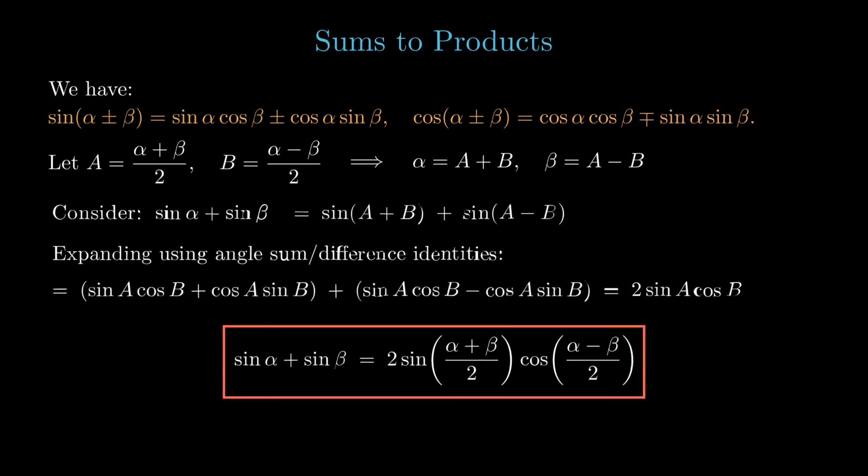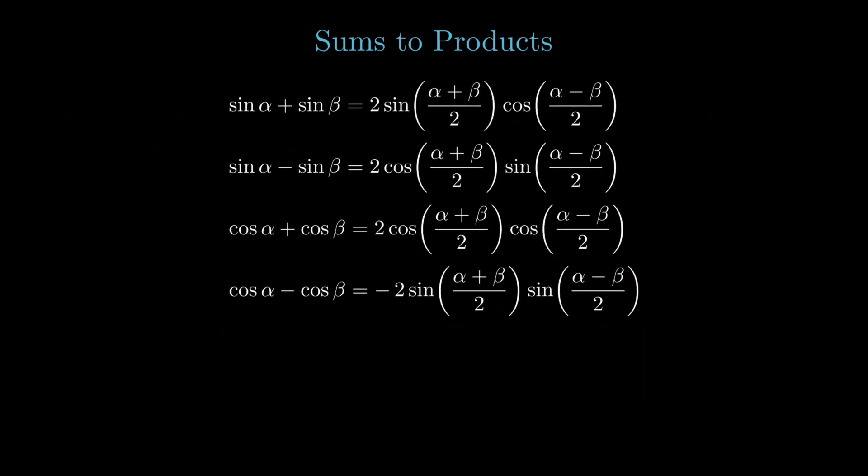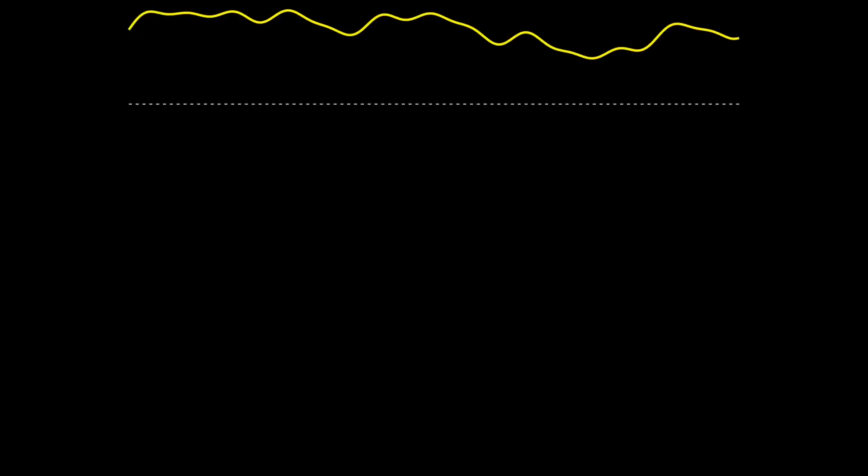In a similar manner, you can obtain the sum to product identities for sin α - sin β, cos α + cos β, cos α - cos β. These identities are extremely useful in physics, from power reduction in integrals to solving trigonometric equations, modulation and beat analysis in waves and signals, and so on. You'll see all of this in physics once we expand on the same here on this channel. For today, let's conclude here.